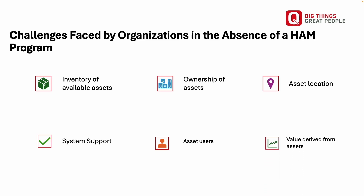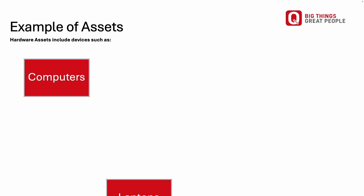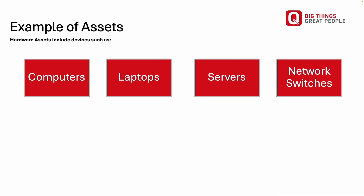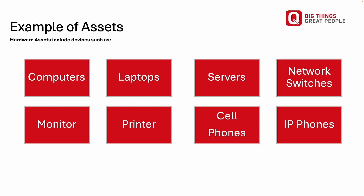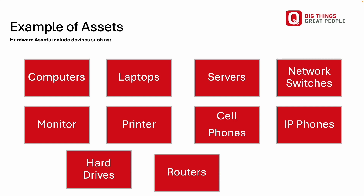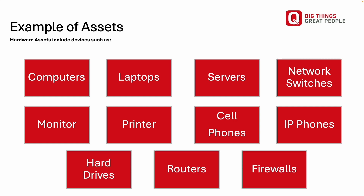Without tracking, it is difficult to measure the true value an asset provides to the organization. Hardware asset management includes devices such as computers, laptops, servers, network switches, monitors, printers, mobile phones, IP phones, hard drives, routers, and firewalls. These assets are referred to as tangible assets because they are physical and can be touched.